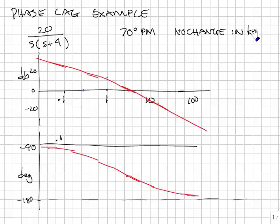So no change in the ramp error constant essentially means that I can't be moving the curve up and down. You can see I could get 70 degrees of phase margin just by attenuating the curve. So by putting a small value for gain, less than 1, that would move the curve down. So it goes like this instead.